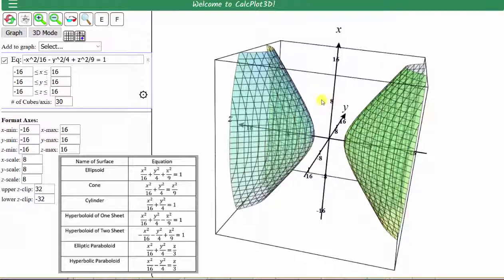Next is the elliptical paraboloid given by the equation x to the second divided by 16 plus y to the second divided by 4 equals z divided by 3.